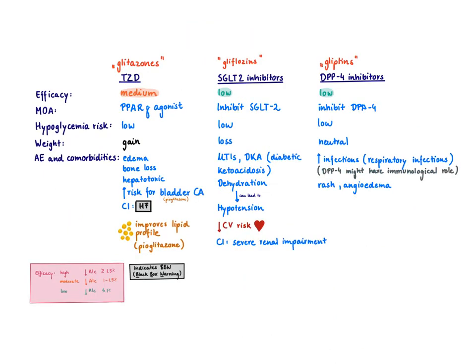Now moving on to the glitazones, the TZDs - they all have 'Z' in the name. They are medium efficacy, so we're going a little bit down. These drugs act via the PPAR gamma receptor, a nuclear receptor. Interestingly, this is also a target of AMPK. You can think about them mechanistically as insulin sensitizers that act downstream of insulin signaling.